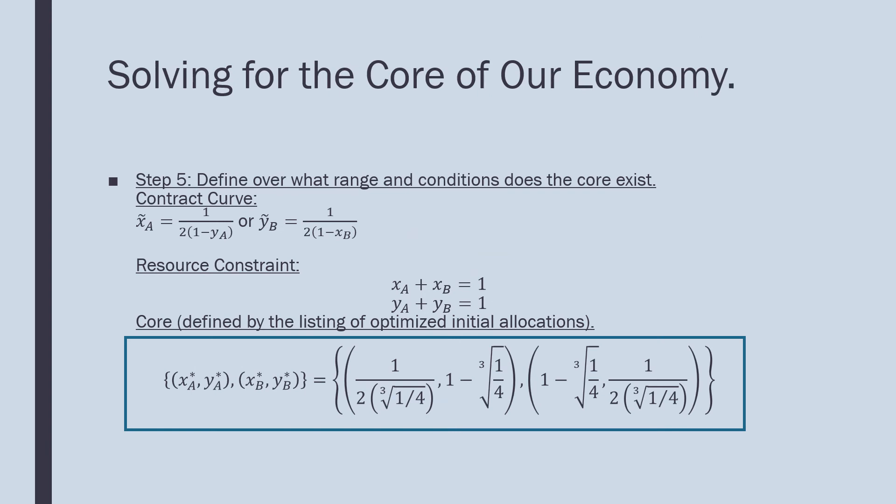Step five: define over what range and conditions the core exists. I'm writing this out in a very specific manner—I don't think my previous video was clear. There's a contract curve, meaning a specific length over which the core is defined. There's a certain path that is defined, and there's the resource constraint defining the size of our economy.